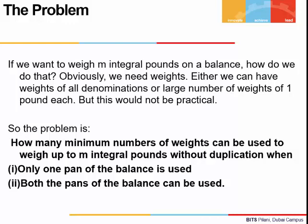There are two options. Either we have weights of all denominations — 1 pound, 2 pound, 3 pounds, etc. — or we have a large number of weights of 1 pound each. But having so many weights is not practical and this doesn't require any maths. It would be ideal if we can weigh anything with the least number of weights. So the problem is: how many minimum number of weights can be used to weigh up to m integral pounds without duplication when only one pan of the balance is used?